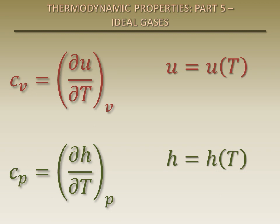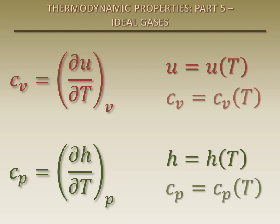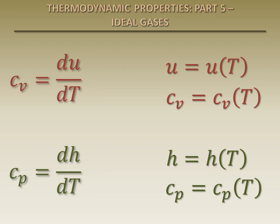Therefore, for a given temperature, the specific internal energy, the specific enthalpy, and the specific heats of an ideal gas have fixed values regardless of the volume and pressure. So the partial derivatives in these expressions can be replaced by ordinary derivatives.